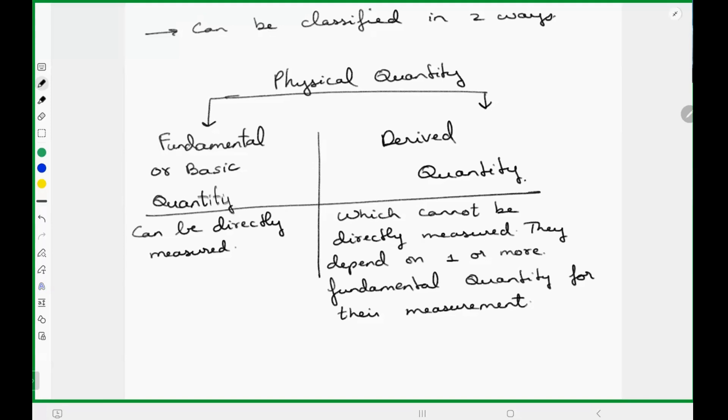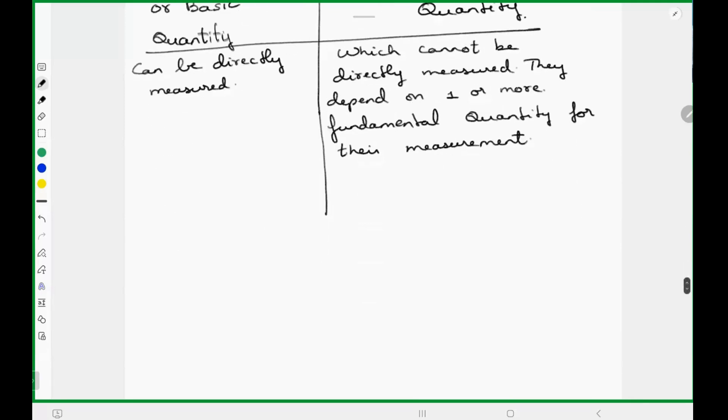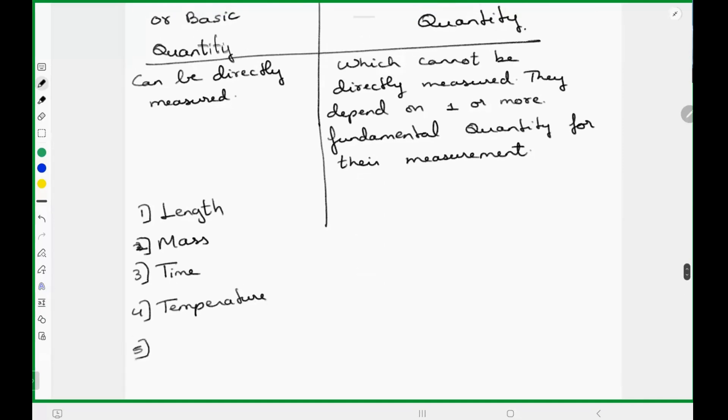Can be measured directly means by using a measuring instrument. For example, in entire physics there are just seven basic quantities. Only seven quantities are there which can be directly measured. Length, mass, time, temperature.